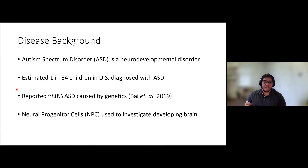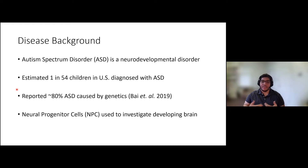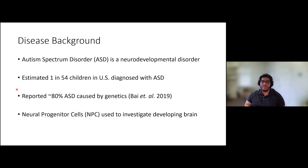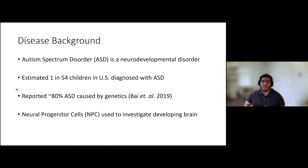Starting with the disease background itself, autism spectrum disorder, or ASD, is a neurodevelopmental disorder, which means its functional effect occurs as the brain is still developing and you only see the effects later after the child is born. The CDC has estimated about 1 in 54 children are diagnosed with ASD, and a recent study reported that approximately 80% of all ASD cases are caused by genetic factors.